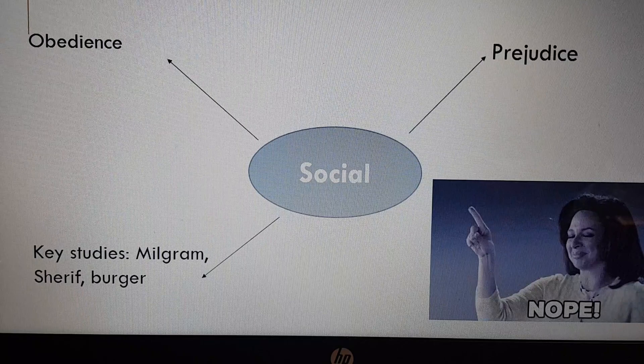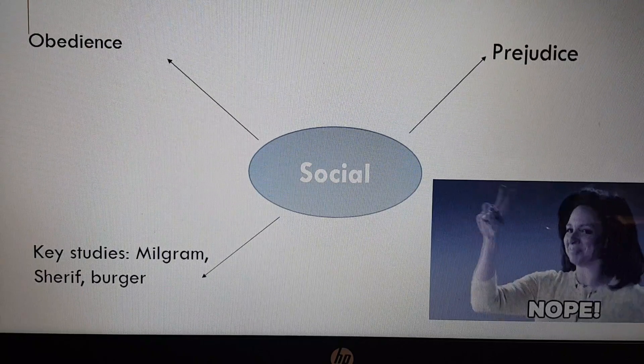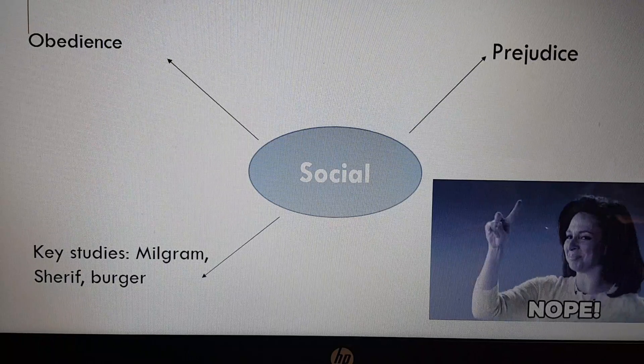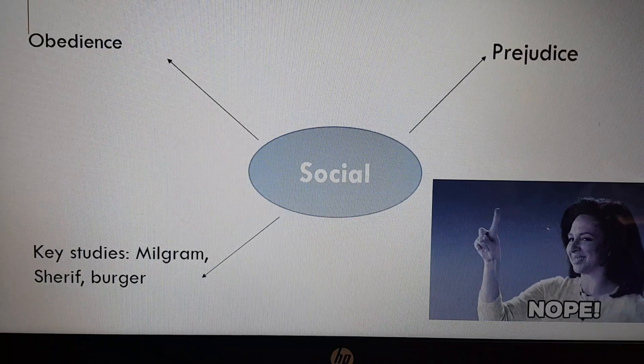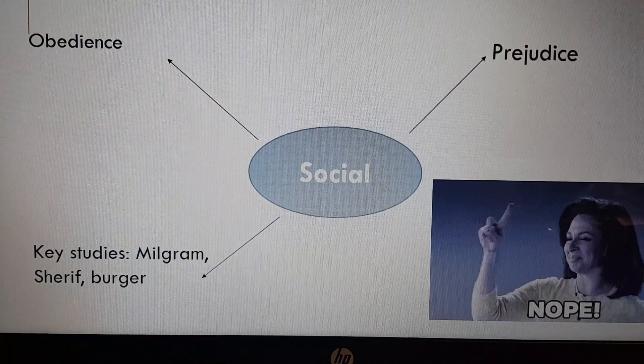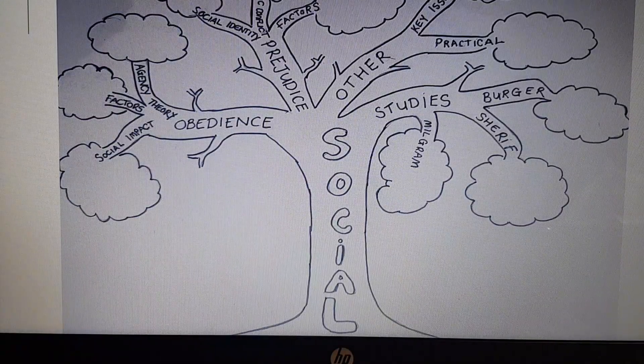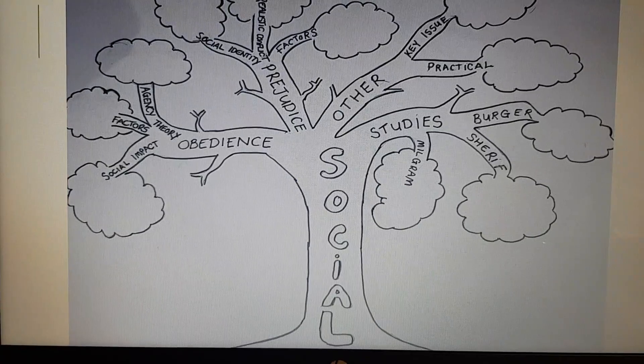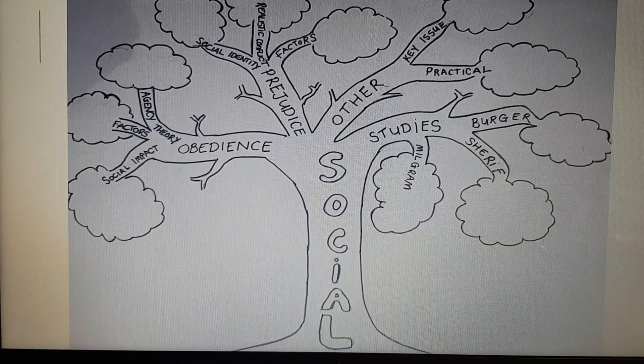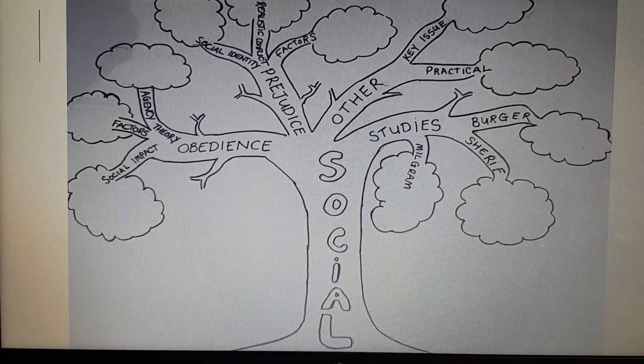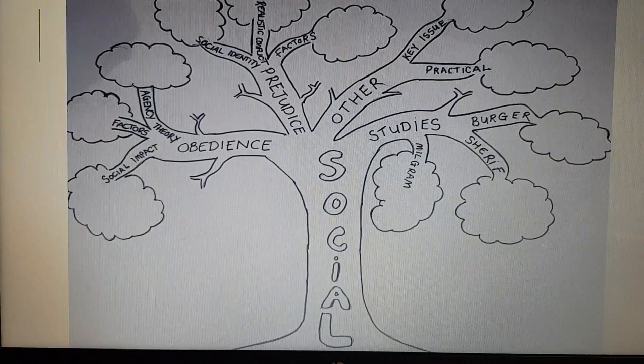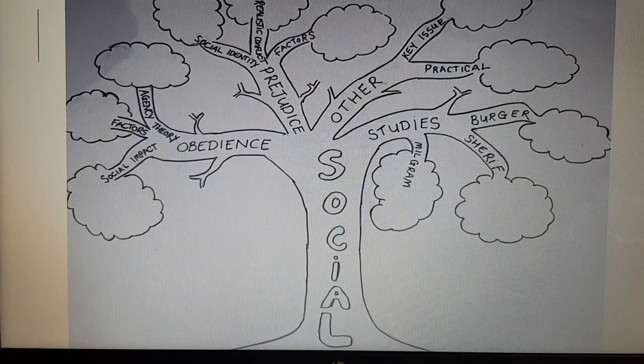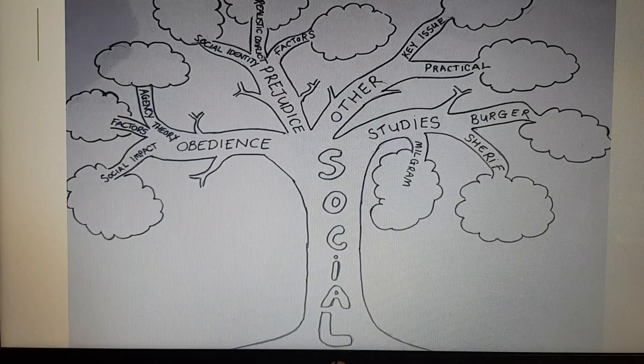So we're going to stick with the social approach and I have drawn a mind map on the next slide which I'm going to talk through. So this is a tree, a mind map consisting of a tree with branches. As you can see in the middle of the tree I've written the social approach, or whatever topic and area it is that you want to study.